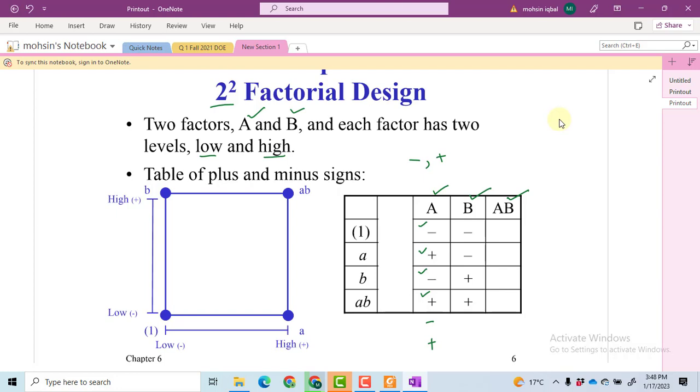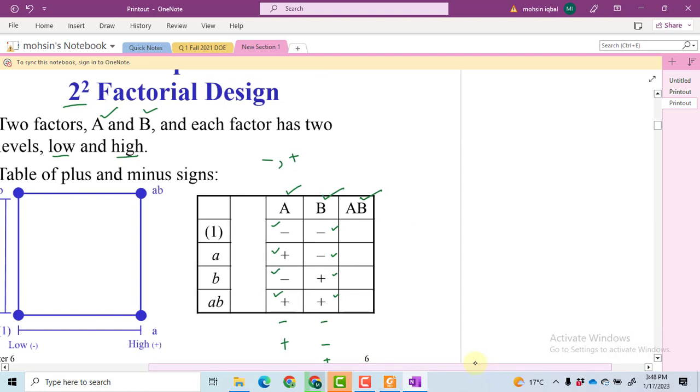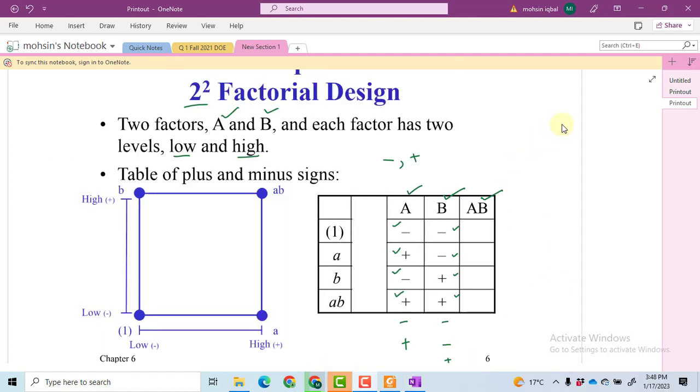We will repeat for the B or the second column, we always do 2 minuses in the start then 2 pluses. Again if it is repeated, then again minus minus then plus plus twice. This is the way that how we can make our 2^k factorial design.